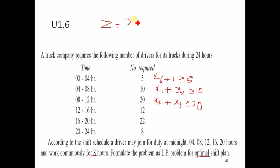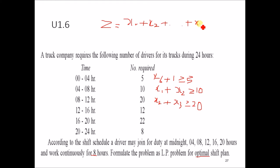The objective function is: minimize Z = x1 plus x2 plus x3 plus x4 plus x5 plus x6. This is a minimization problem. We will now look at a similar example.